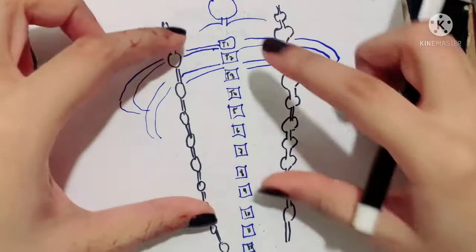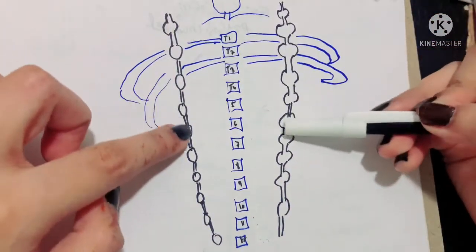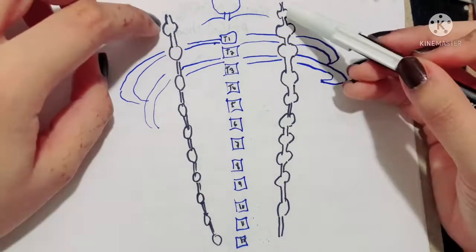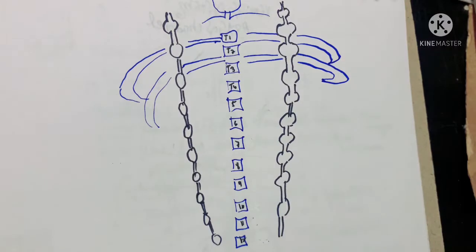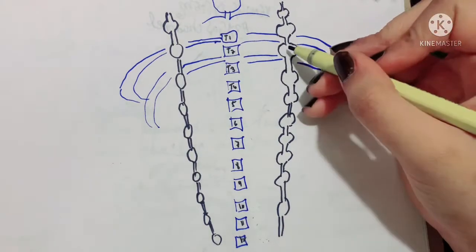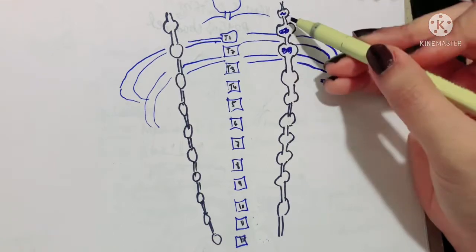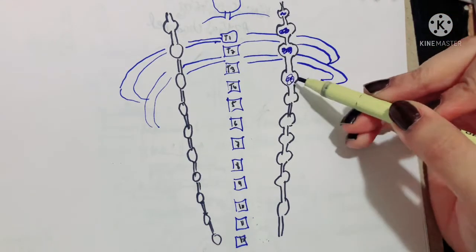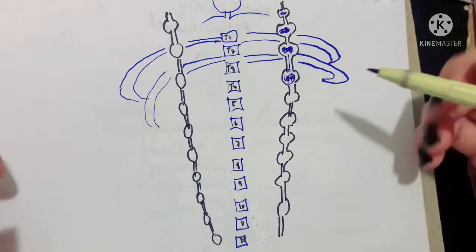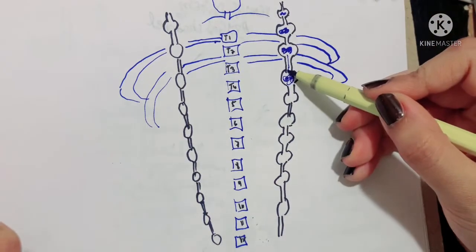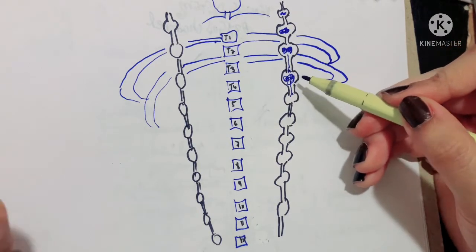The thoracic part of this chain is basically a ganglionated trunk consisting of 12 thoracic ganglions. Ganglions are collections of cell bodies. These cell bodies give a relay point to the traveling nerve fibers, telling them they can end right there and more nerves will be given off, so the fibers don't have to run a large distance.